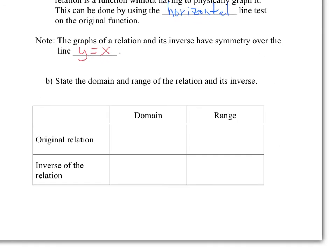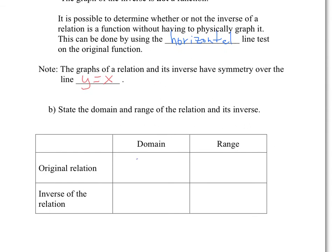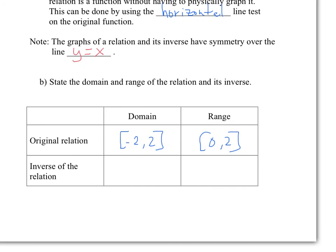Let's look at the domain and range of the relation and its inverse. The domain of the original function is −2 to 2, and the range is 0 to 2. For the inverse, the domain is 0 to 2 and the range is −2 to 2. So the domain and range simply switch — the range becomes the domain and the domain becomes the range — because you're flipping x and y values.